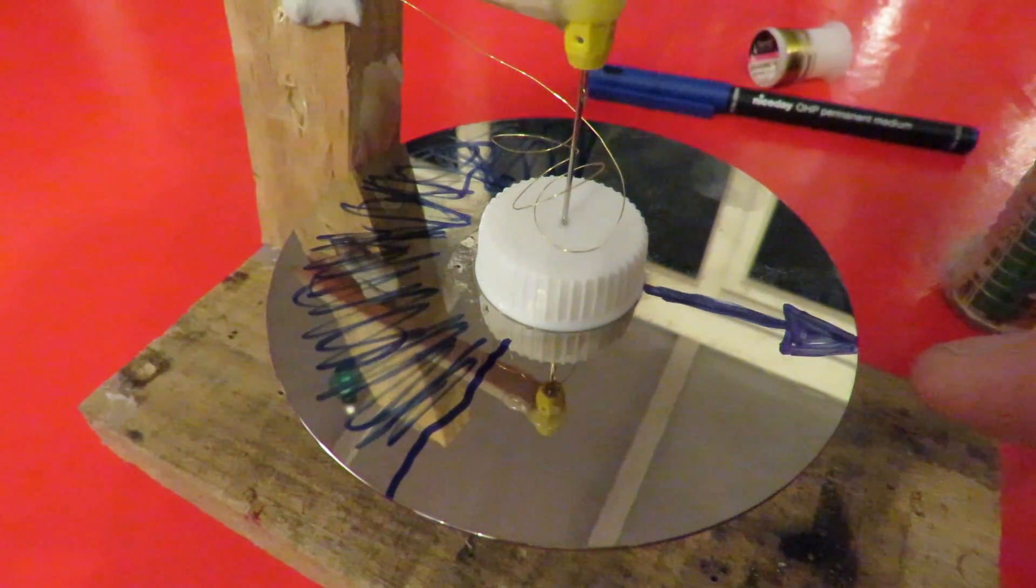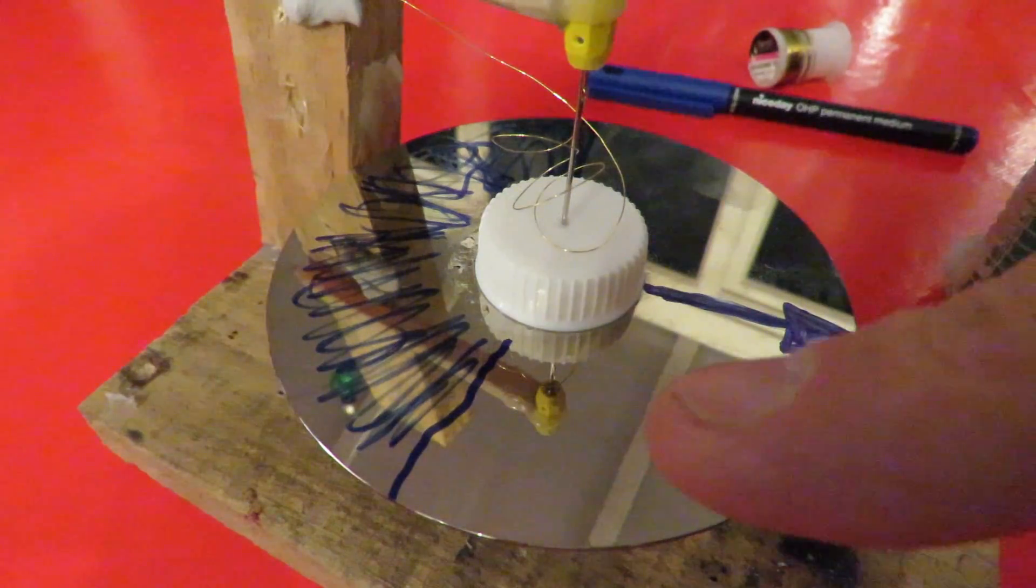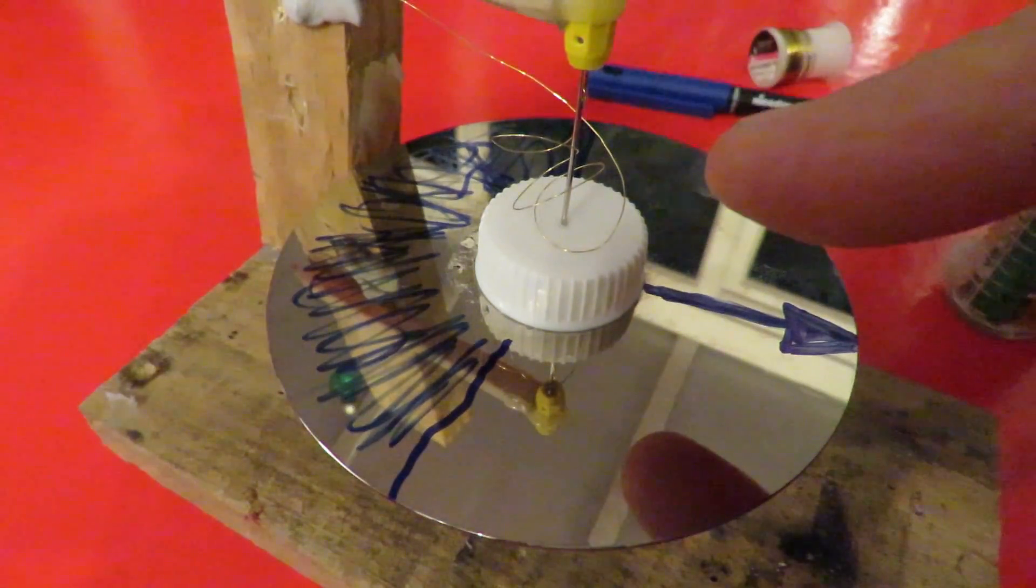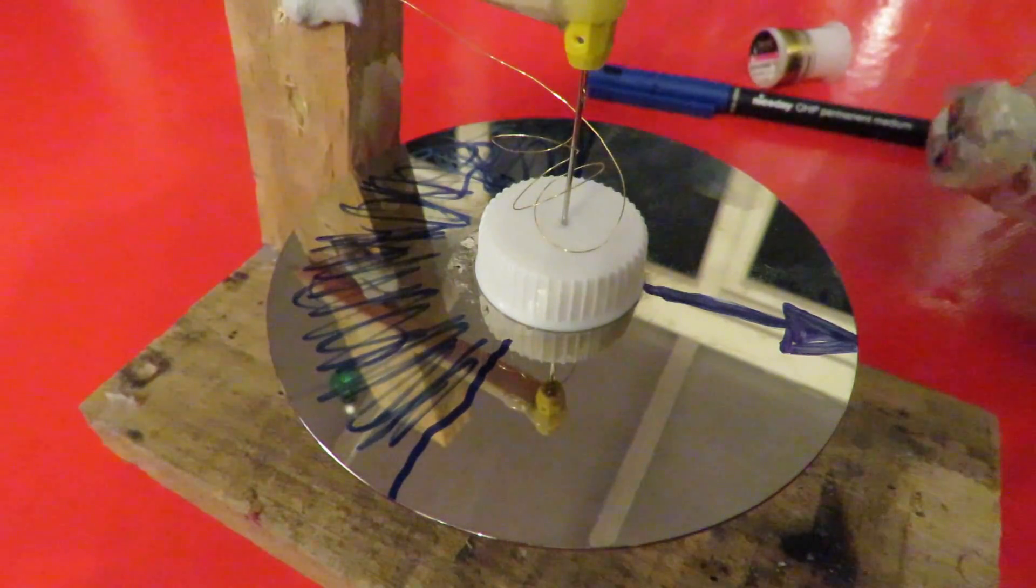So if you watch the arrow, instead of the disc spinning round and round, it will just move until it's got enough resistance from the hair spring that I've got there. Let's see if I can demonstrate.